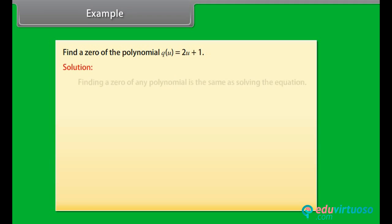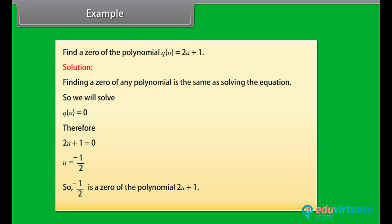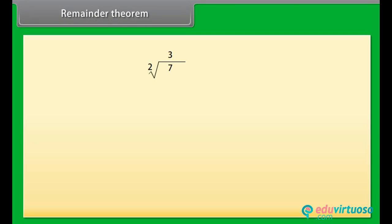Find a zero of the polynomial Q(u) = 2u plus 1. Finding a zero is the same as solving the equation Q(u) = 0. So 2u plus 1 = 0 gives u = minus 1/2. Therefore, minus 1/2 is the zero of the polynomial 2u plus 1.